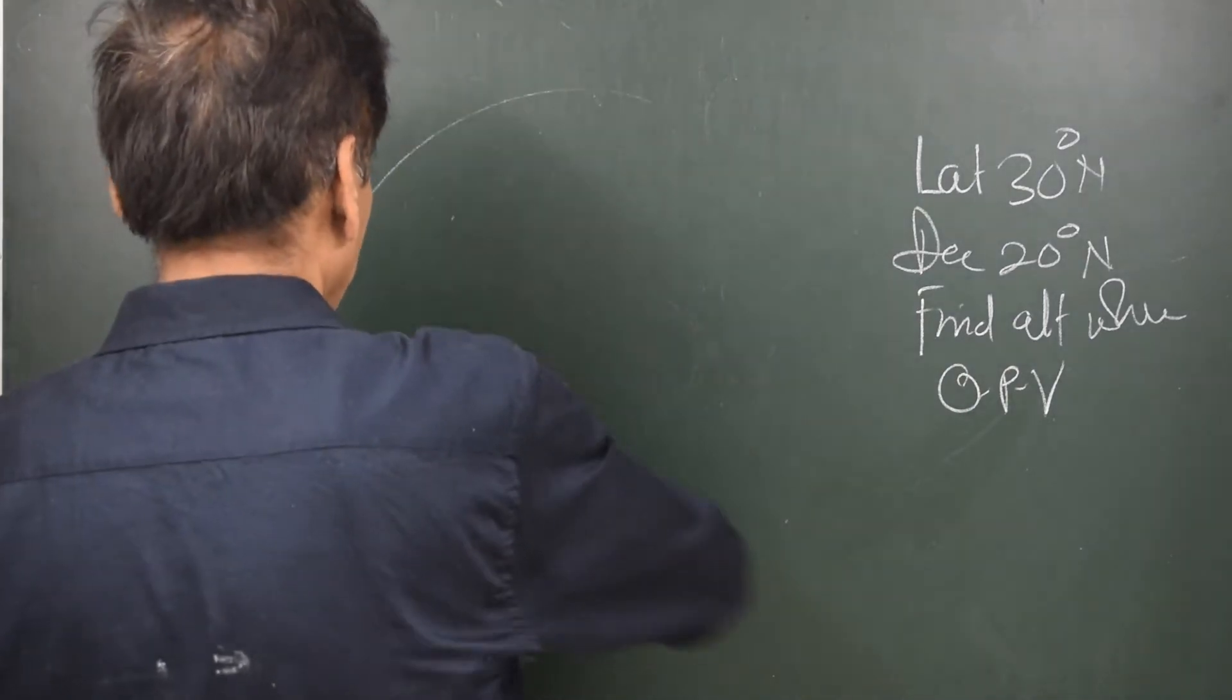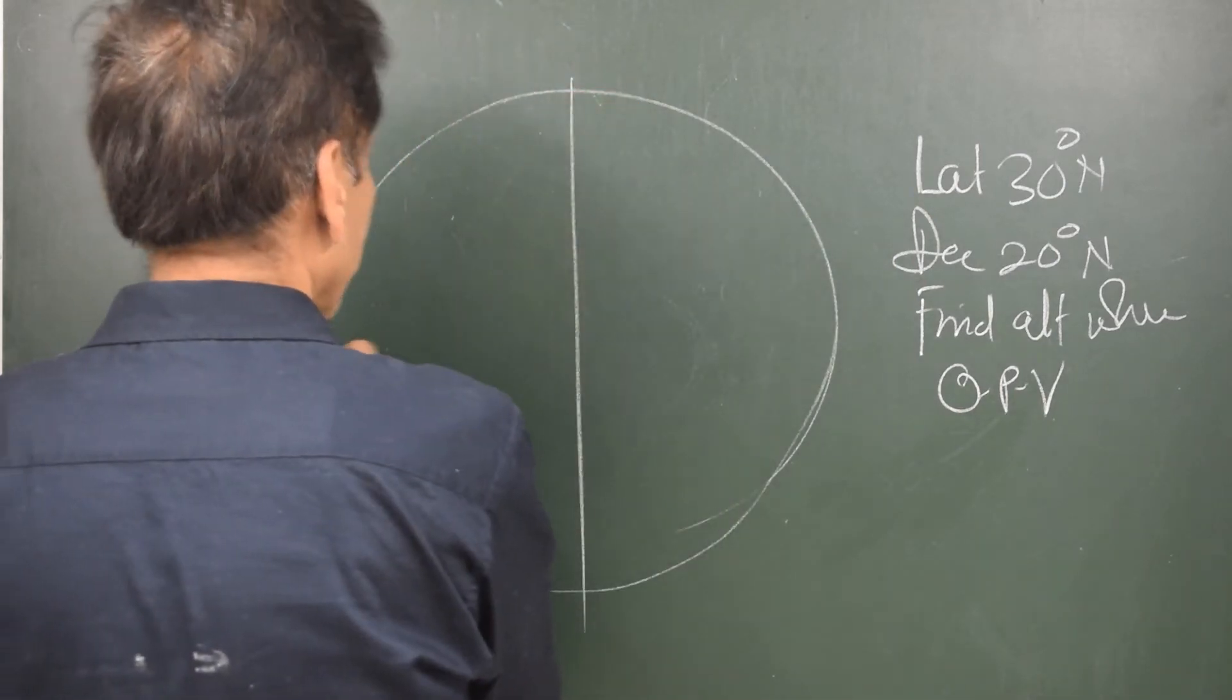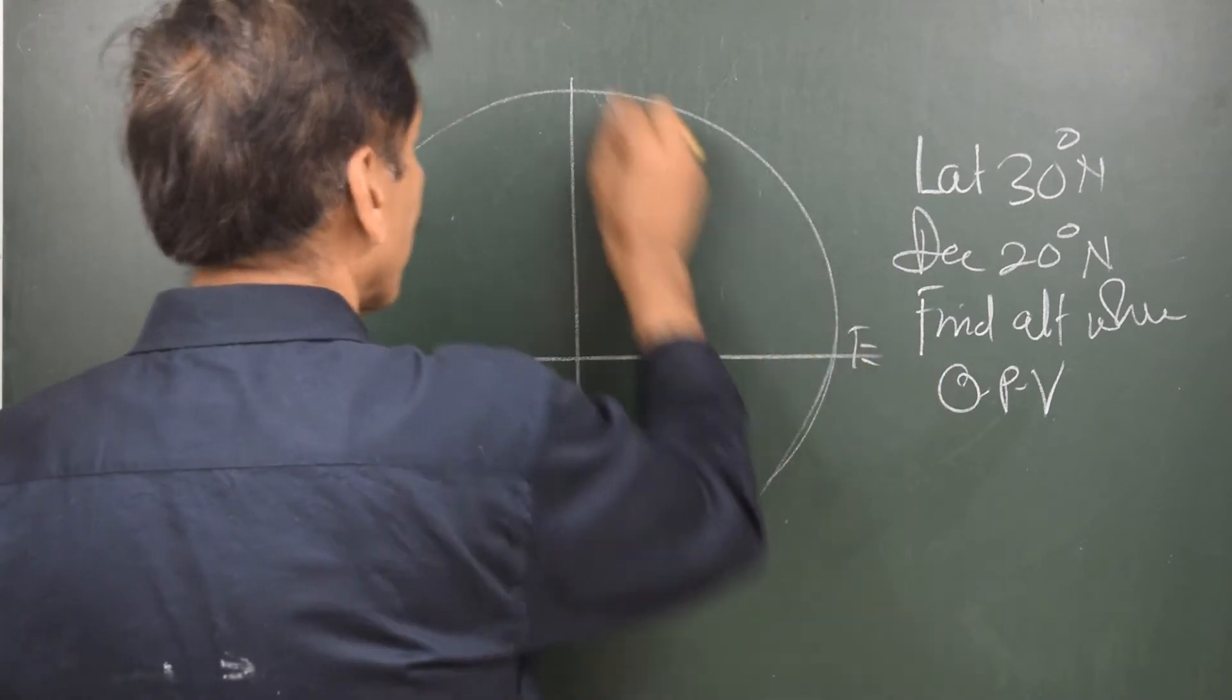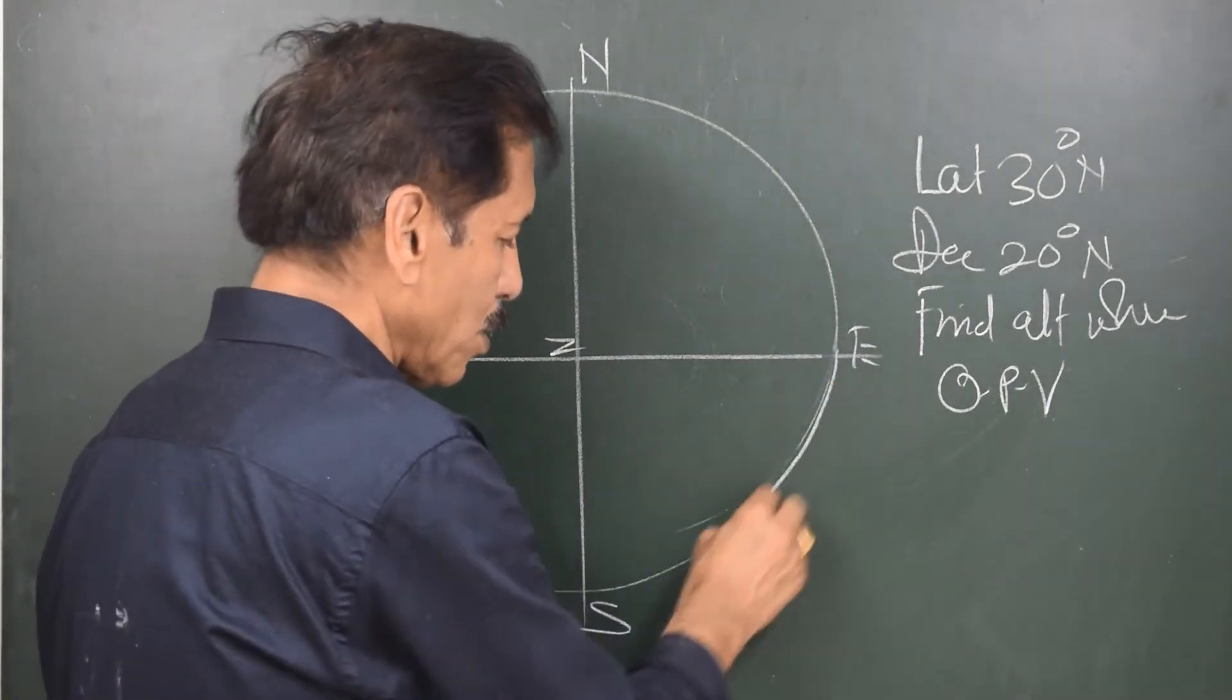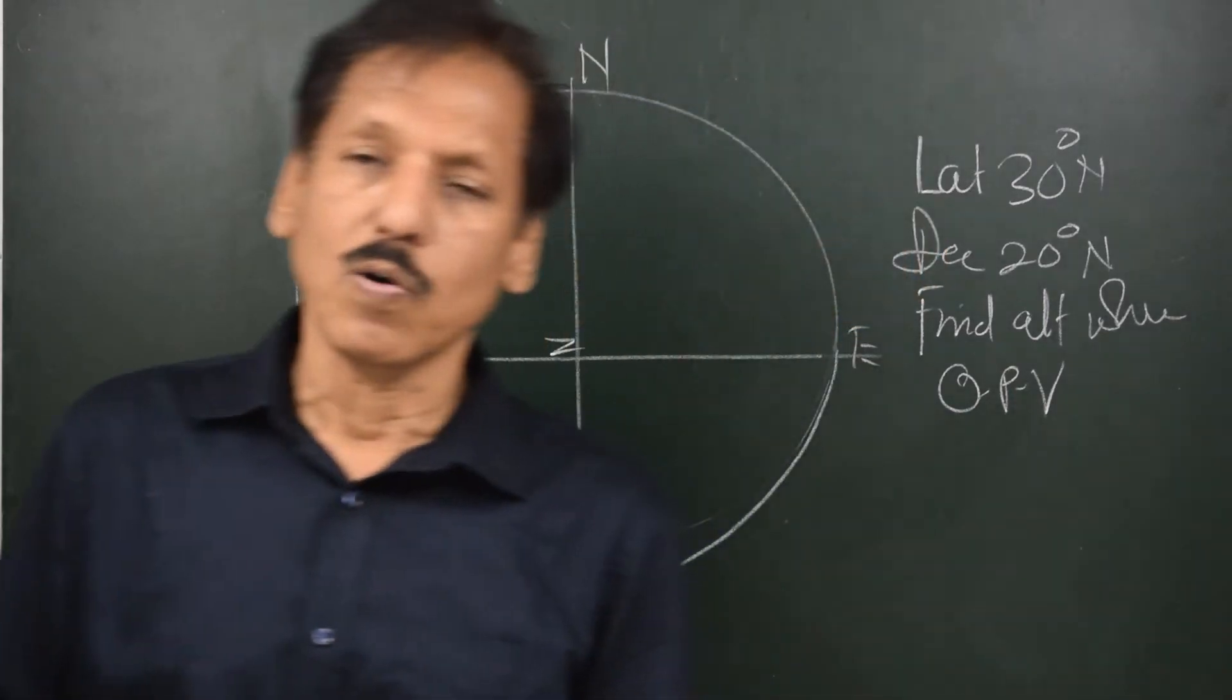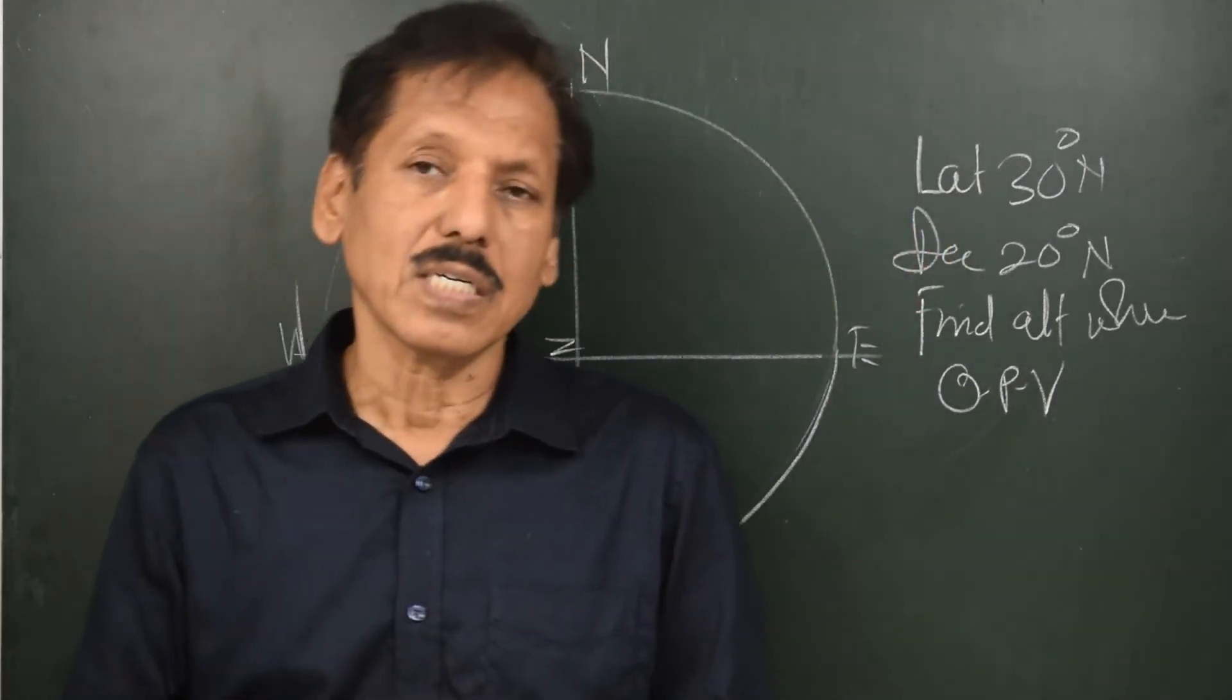So to draw the observer's rational horizon diagram, let's draw a circle, divide it in 4 parts, we will write down V, North-South and this is observer's zenith. Of course for all the nautical observations, we assume that we are looking at the heavenly bodies from the centre of the earth, that means the core centre of the earth, assuming the earth to be a transparent globe.